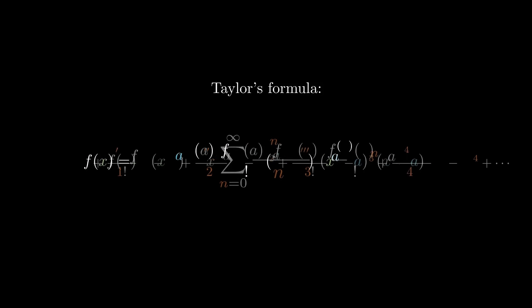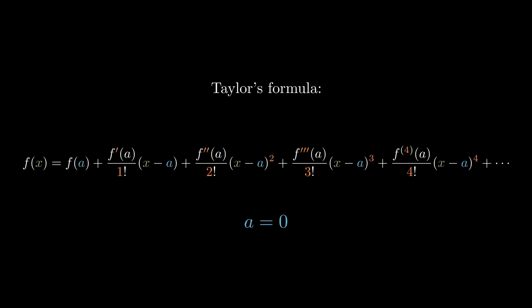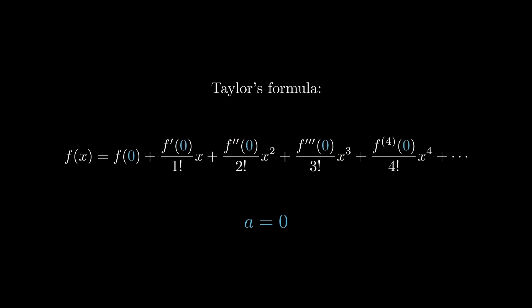So we're going to derive this identity using Taylor polynomials. So this is Taylor's formula, and it allows us to expand non-polynomial functions as infinite polynomials. And specifically for those centered at zero, we call them Maclaurin polynomials.